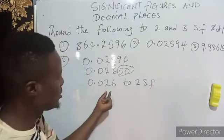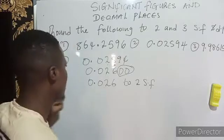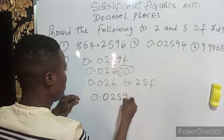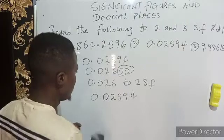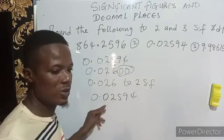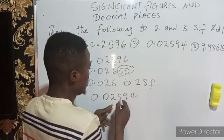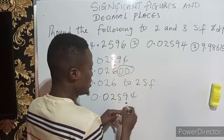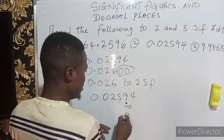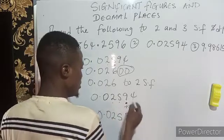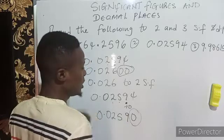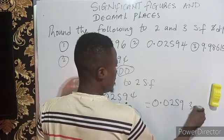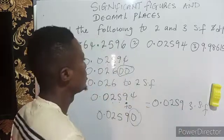You can see only two significant figures here, because zero is insignificant. The same number, 0.02594, to three significant figures — I won't count the leading zeros; I count one, two, three. This is my target. The next number is not up to five, so I'm adding zero. I still have 0.0259 — every other number turns to zero, and zero is insignificant, so the answer is 0.0259 to three significant figures.